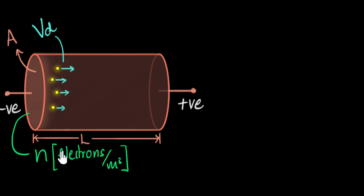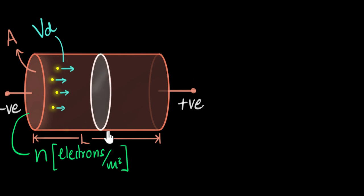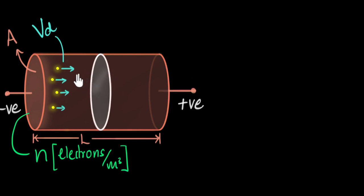So given these, how do we calculate current? We can do this just from fundamentals, from first principles, without using any formula. Since current is the amount of charges flowing per second through any cross-sectional area, let's start by looking at some cross-sectional area. If we concentrate on this cross-sectional area, all I need to calculate is in one second how many electrons are passing through it. If I know that number, I've got my current. For example, if 10,000 electrons are passing through this in one second, then the current must be 10,000 e, because each electron has charge e.